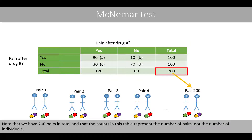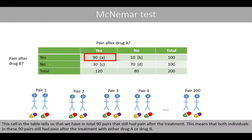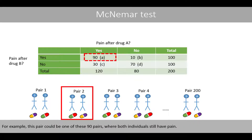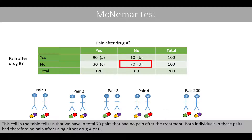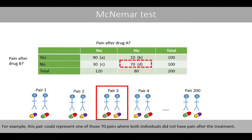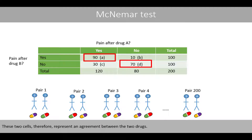Note that we have 200 pairs in total, and that the counts in this table represent the number of pairs, not the number of individuals. This cell in the table tells us that we have 90 pairs that still had pain after the treatment — both individuals in these 90 pairs still had pain after treatment with either drug A or B. Both individuals in the other group of 70 pairs had no pain after using either drug A or B. These two cells therefore represent an agreement between the two drugs.